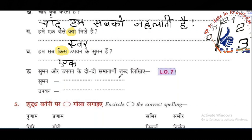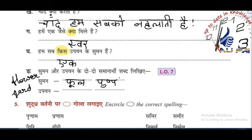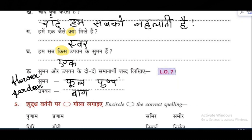Next is learning objective seven — just a PCAP or knowledge of India's. From this we are going to learn synonyms. Suman means flower; we also say pusp — very good, pusp. Next: upvan means garden. Garden we say bog or vatica.